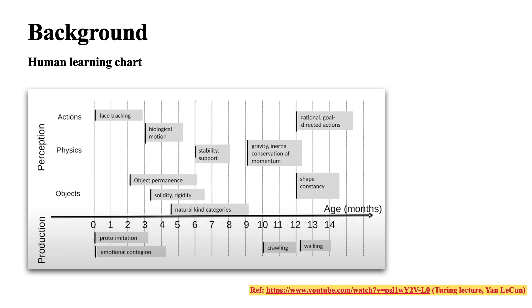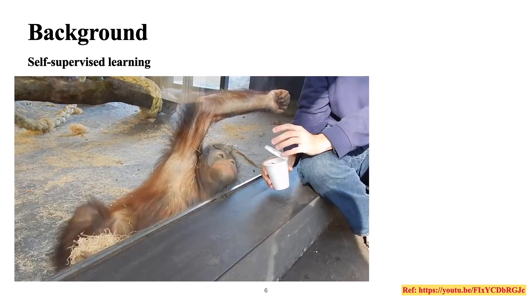Here is a chart of how humans learn. The x-axis shows age in months and the y-axis shows learning milestones. At six months, a baby learns about stability, support, and gravity — for example, a dropped pen falls down, not up. By the tenth month, it starts crawling, followed by walking. Now let's see how a monkey learns something.